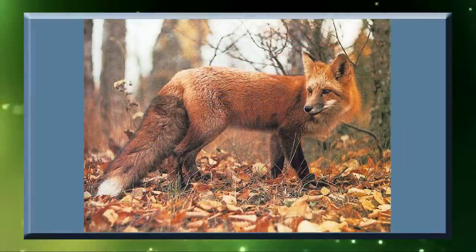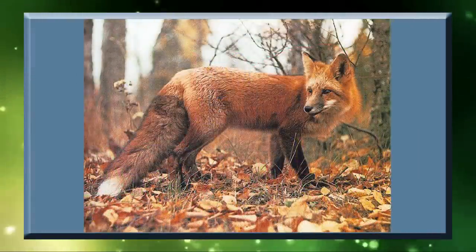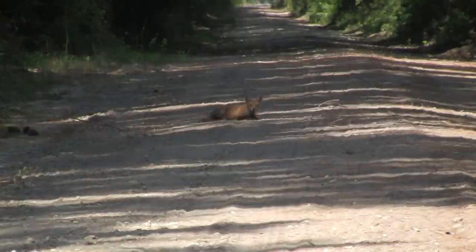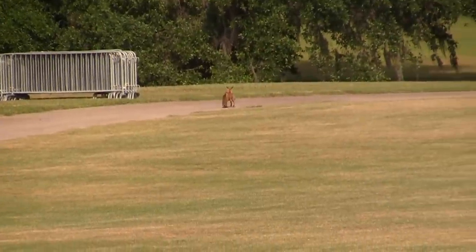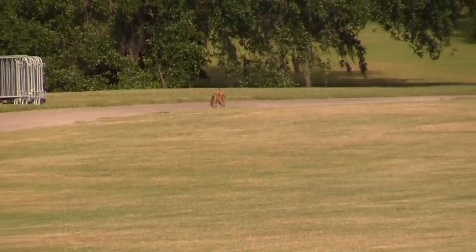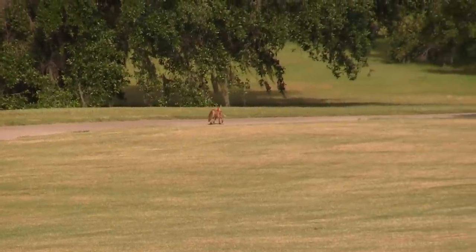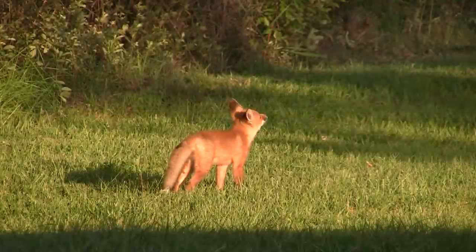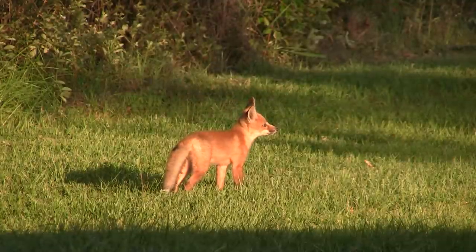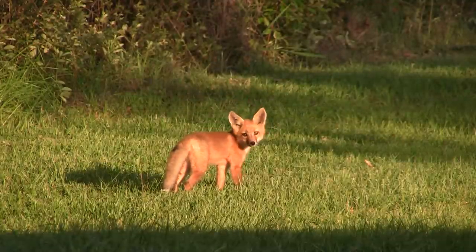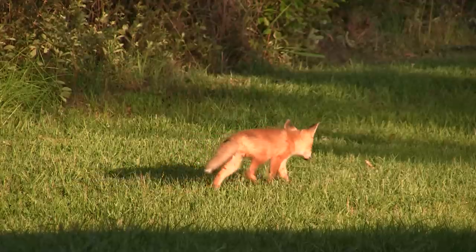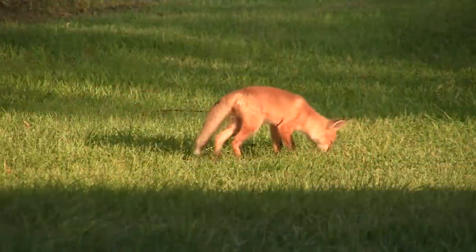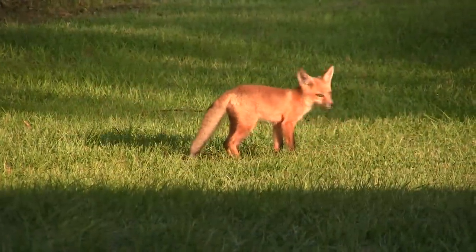Red foxes are faster than gray foxes, which serves them well because gray foxes will attack them as competitors for food. Both species eat small mammals such as squirrels, rabbits, and mice, and also eggs, reptiles, and even insects. Surprisingly, as omnivores, they also eat fruits, acorns, and grasses. Both types of foxes are excellent tree climbers, which expands their hunting opportunities.